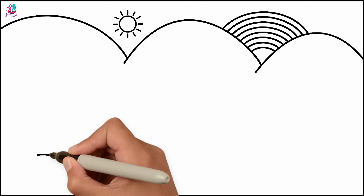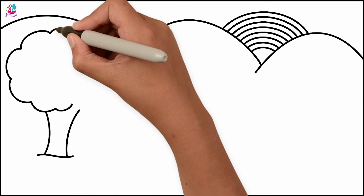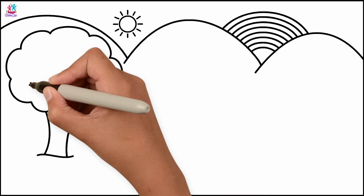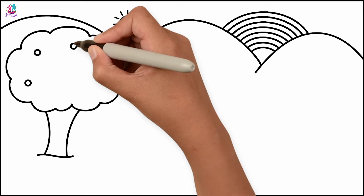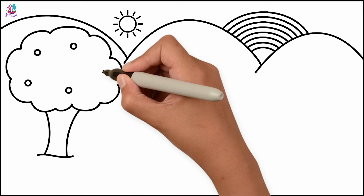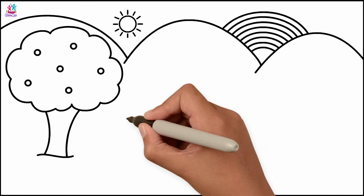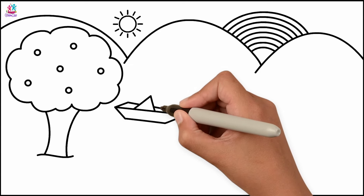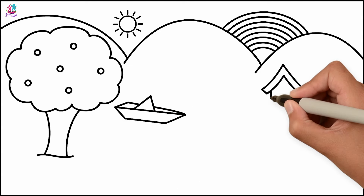Let's do a tree. How about some fruit in the tree? Just some little circles. A boat. And a house with a triangle roof.